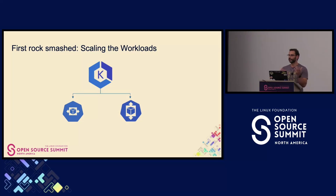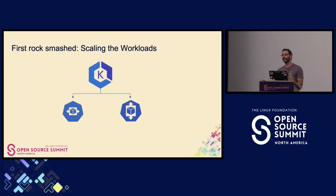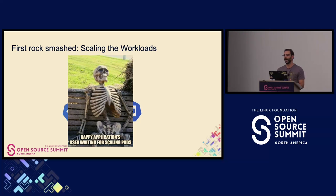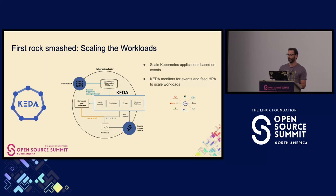So let's concentrate on HPA. What is the thing with HPA? In the worst case scenario, HPA will take up to one minute and a half to scale the pods. So in a really critical application, this could lead to really unhappy users waiting for our application to scale. So a better approach could be to use something like KEDA. KEDA stands for Kubernetes Event-Driven Autoscaling, which is a new strategy for scaling pods in an event-driven fashion way.